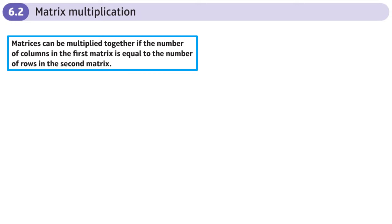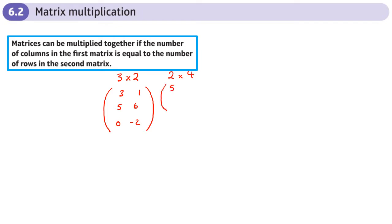This is section 6.2, the second section in matrices, and here we're going to be doing matrix multiplication. This is different to adding. I'm going to make up some matrices as an example. The first matrix is 3 by 2, and I'm going to multiply it by a matrix which is 2 by 4: 5, 0, 1, 2, negative 1, 1, 7, negative 3.